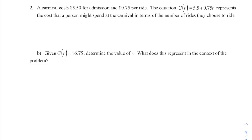The next thing I want to look at is a problem where we kind of go backwards. So here's a situation where a carnival costs $5.50 for admission and 75 cents per ride. So we start at $5.50 and change by .75. They give us the equation. Now for part B, they tell us that C of R equals 16.75 and ask us what R is. R is what's in parentheses. That means R is the input. What's outside of parentheses is the output. So they're telling us that 16.75 is the output. And they want to know what's the input.